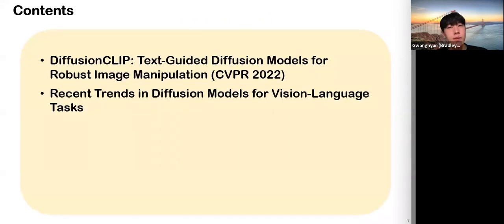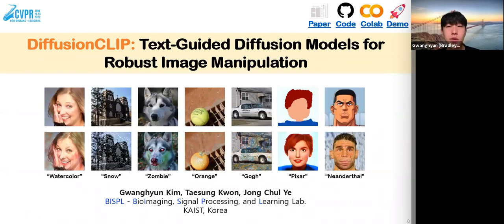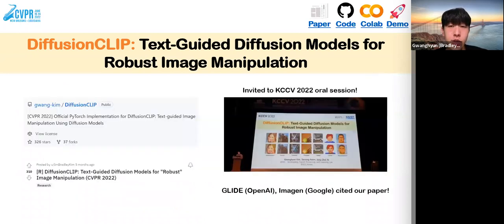From now on, I'm going to first introduce Diffusion Clip, followed by overviews of recent trends in diffusion models for vision-language tasks. Diffusion Clip was done with Jong-Chul Ye and Taesung Kwon when I was a master's student at KAIST. It was accepted to CVPR and became popular in GitHub and Reddit machine learning communities, and also invited to KCCV. Glide and Imagen, which are recent state-of-the-art text-to-image generative models, cited our paper.